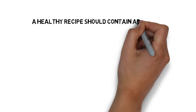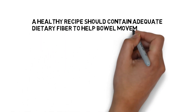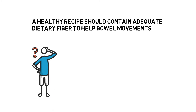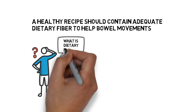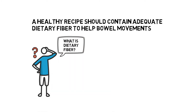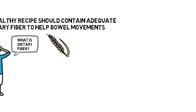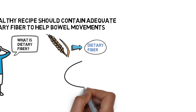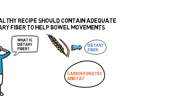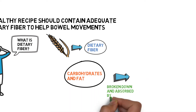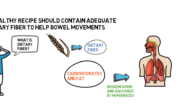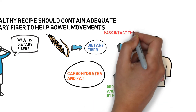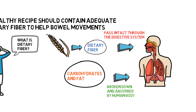You may have always heard that a healthy recipe should contain adequate dietary fiber to help your regular bowel movements. What is dietary fiber? Dietary fiber refers to a group of things which are from plant foods. Unlike other foods such as carbohydrates and fat which will be broken down and absorbed, dietary fiber cannot be digested or absorbed by the human body. That means they will pass relatively intact through the digestive system such as the stomach, small intestine, and colon.